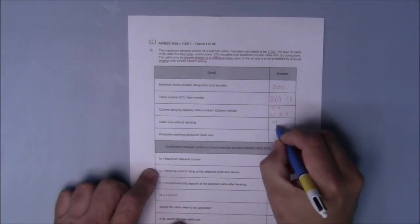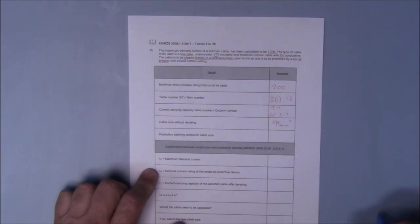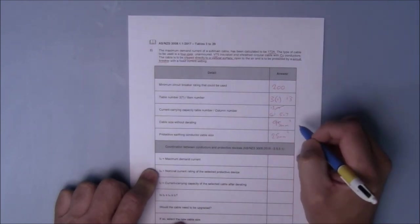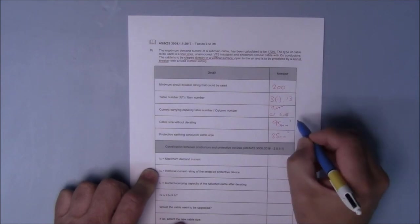We just said a 95mm² would carry the appropriate amount. The protective earthing cable size out of table 5.1 in AS3000 is a 25mm². We can get rid of the reference to 14 and we can get rid of the reference to 7.